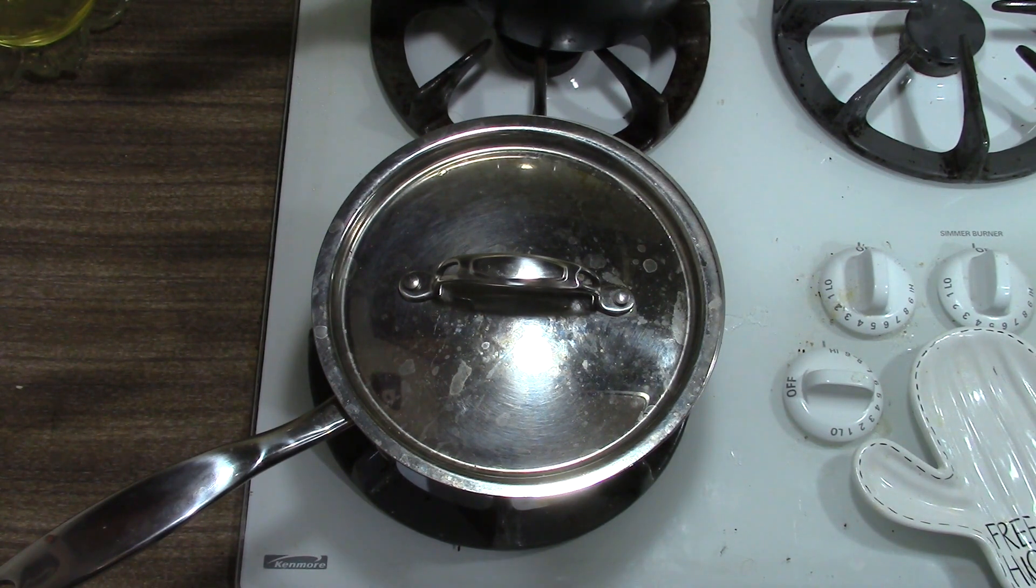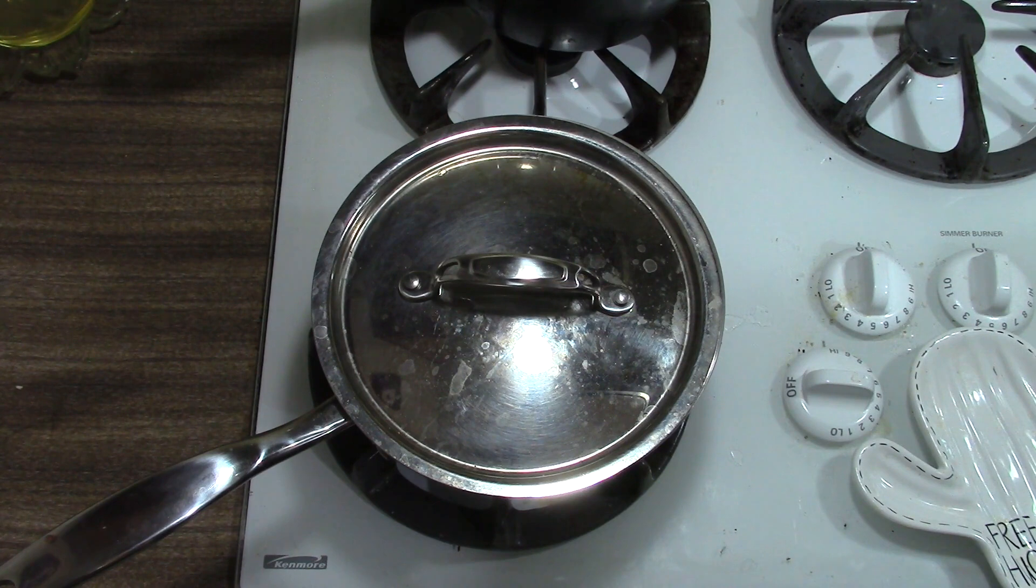This pot here, I treated myself to recently. I think I paid, well, it was $165 for this. It's a two-quart saucier pot from Heritage Steel, made in the United States, and it's a titanium steel. Supposedly it's supposed to be tougher than regular steel.